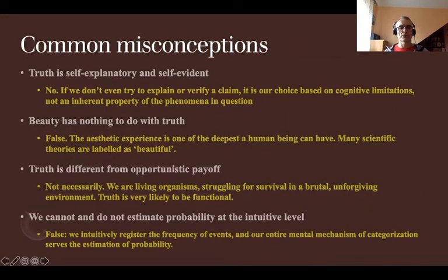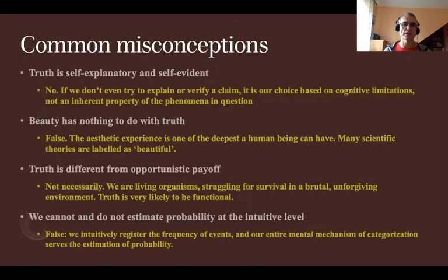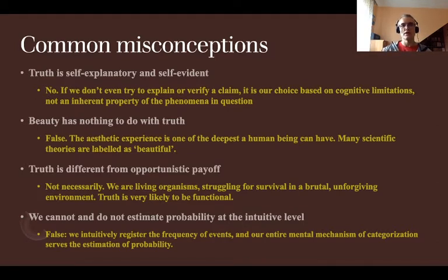Now, common misconceptions about those theories of truth. Misconception number one: truth is self-explanatory and self-evident. No — it is an illusion, or a loop of self-reinforcement. Once we have assumed that something is true, it is easier for us to reduce cognitive dissonance by assuming that what we once claimed as true is self-explanatory and self-evident. But it is just a reduction of cognitive dissonance — not an inherent property of the phenomena in question.